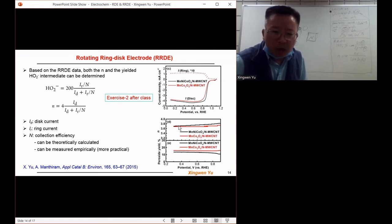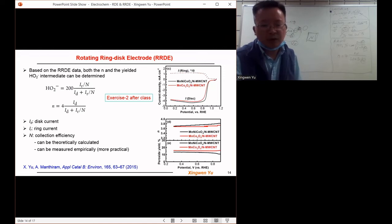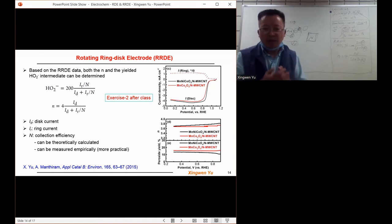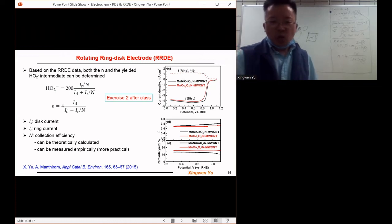So the plots below are the calculated charge transfer number N and the percentage of the intermediate species generated from the oxygen reduction reaction. So the advantage of using RRDE relative to the RDE.